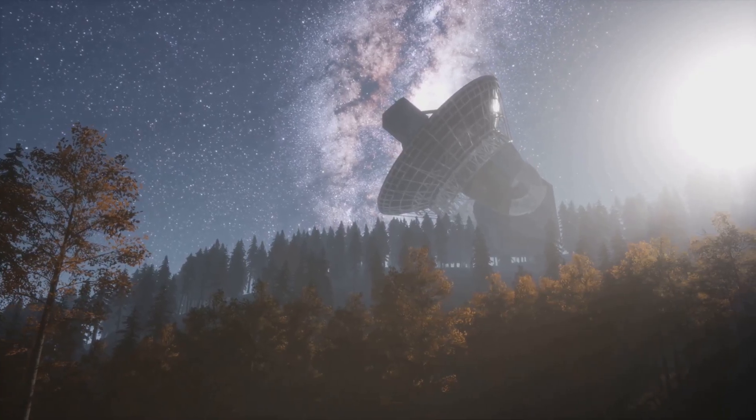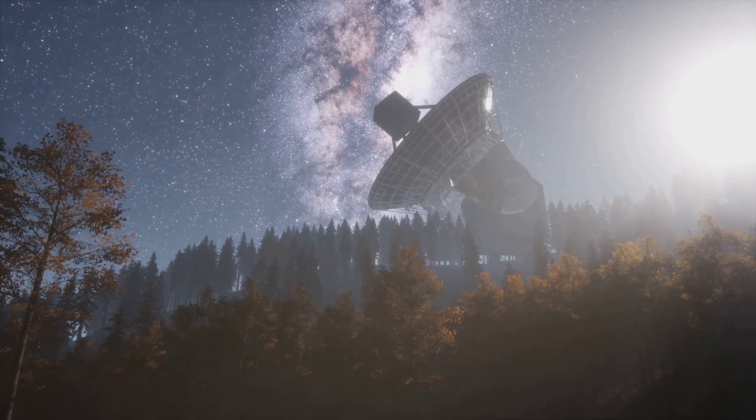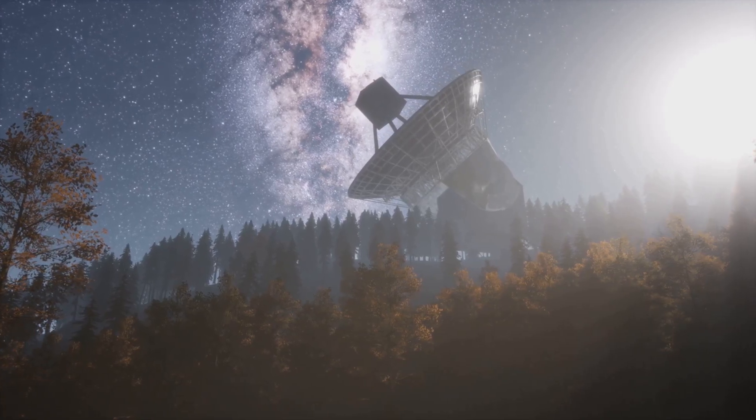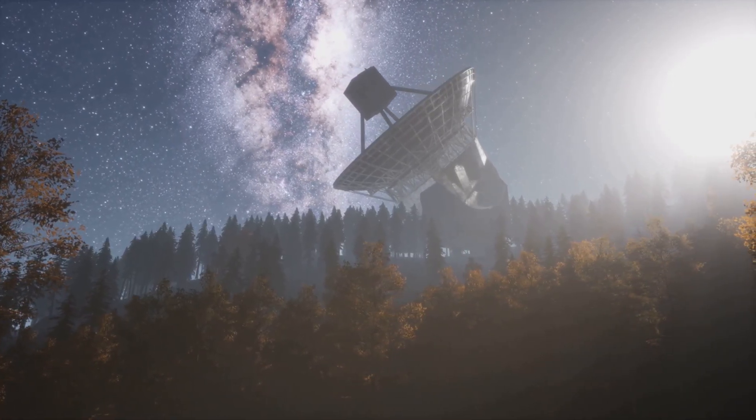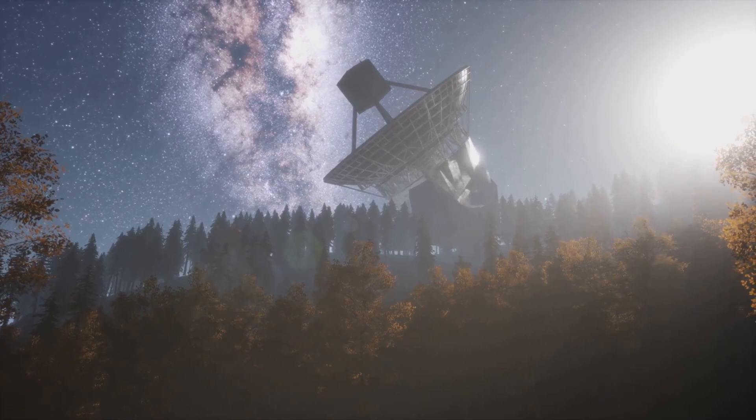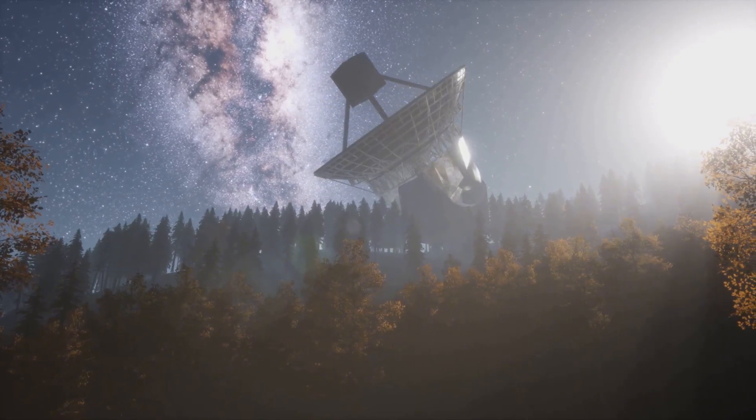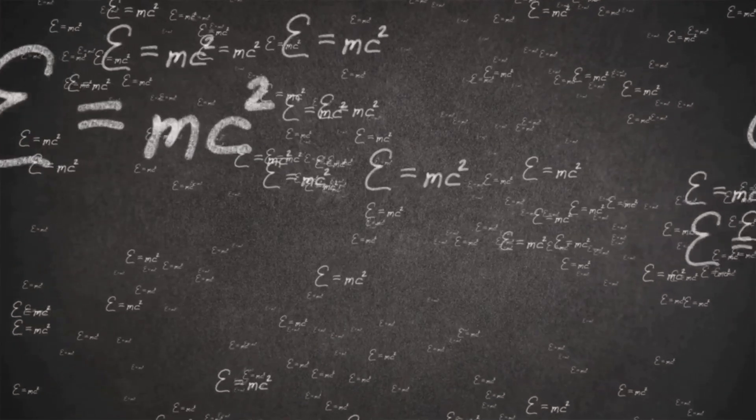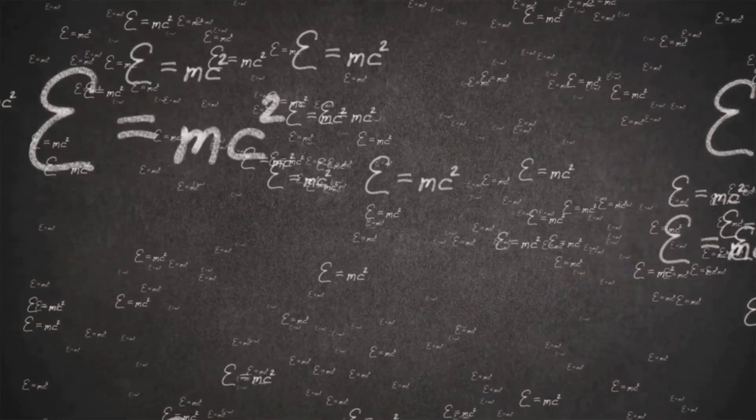But the real magic of light speed is not just its quickness. It's its universality. No matter where you are in the universe, no matter how fast you're moving, if you measure the speed of light, you'll always get the same answer, 299,792 kilometers per second. This constancy is what shook physics to its core at the start of the 20th century.